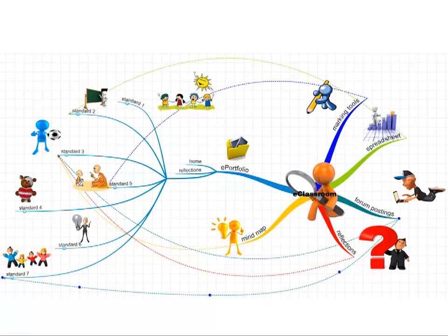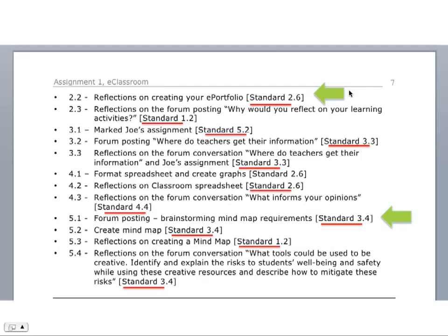For example, the marking tools — see the blue line that goes all the way from here to here. The marking tools relate directly to one of the standards; that was standard five. The spreadsheet directly links to standard two. The reflections on creating your e-portfolio — whether you had a meltdown, felt like you were wasting your time, or had a great time — should be answering standard 2.6.